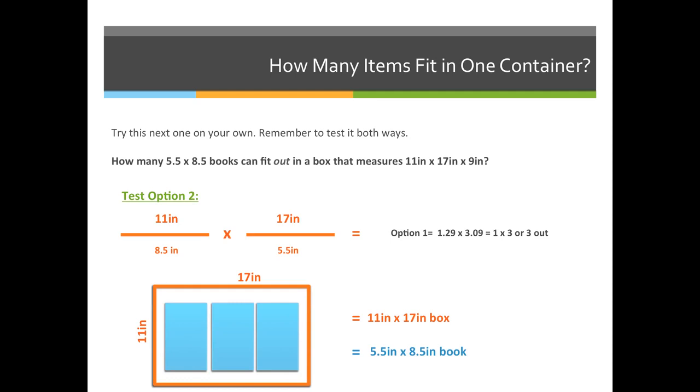Option number 2, we will take the same value 11x17 and we'll switch the bottom. So, 11 divided by 8.5 is 1.29 and 17 divided by 5.5 is 3. We take the whole numbers, which is 1 times 3 and we'll get 3 out.